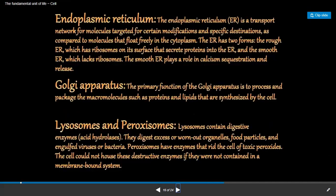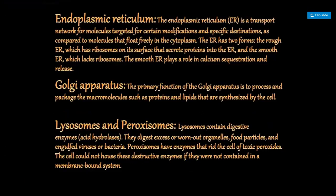The next term is endoplasmic reticulum. It is a transport network for molecules targeted for certain modifications and specific destinations, as compared to molecules that float freely in the cytoplasm. The endoplasmic reticulum has two forms: rough ER and smooth ER. Rough ER has ribosomes on its surface that secrete proteins into the ER.